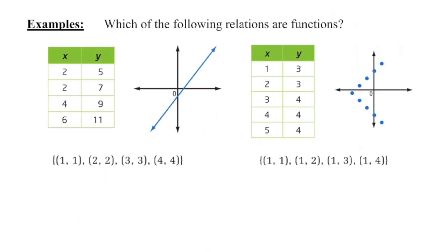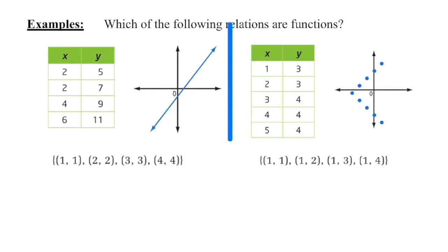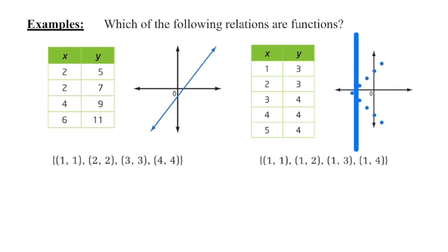We have examples of relations represented three ways: tables of values, graphs, and ordered pairs. We'll identify which are functions. Starting with the graphs — I run the vertical line test across the first graph, and at each point it touches only one value, so that is a function. On the second graph, as soon as I reach a certain x value the line hits two different y values, so that graph is not a function.